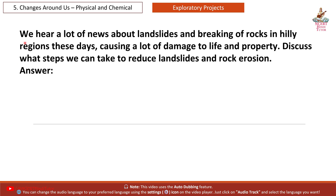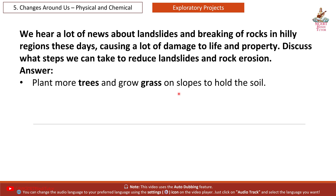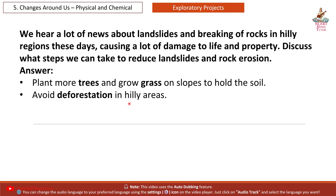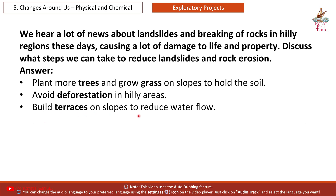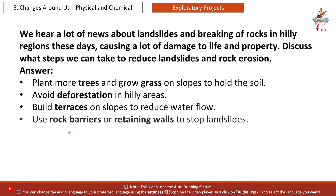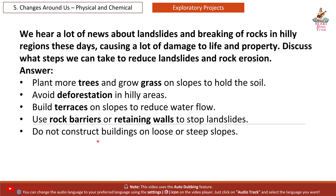We hear a lot of news about landslides and breaking of rocks in hilly regions these days, causing a lot of damage to life and property. Discuss what steps we can take to reduce landslides and rock erosion. Answer: Plant more trees and grow grass on slopes to hold the soil. Avoid deforestation in hilly areas. Build terraces on slopes to reduce water flow. Use rock barriers or retaining walls to stop landslides. Do not construct buildings on loose or steep slopes.